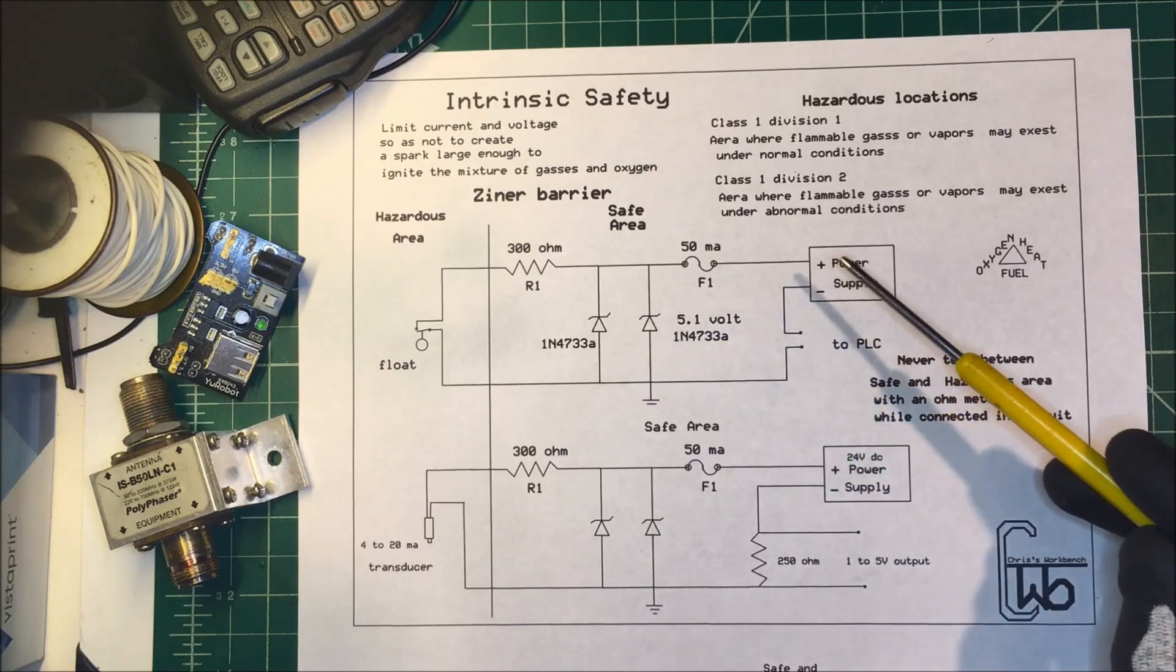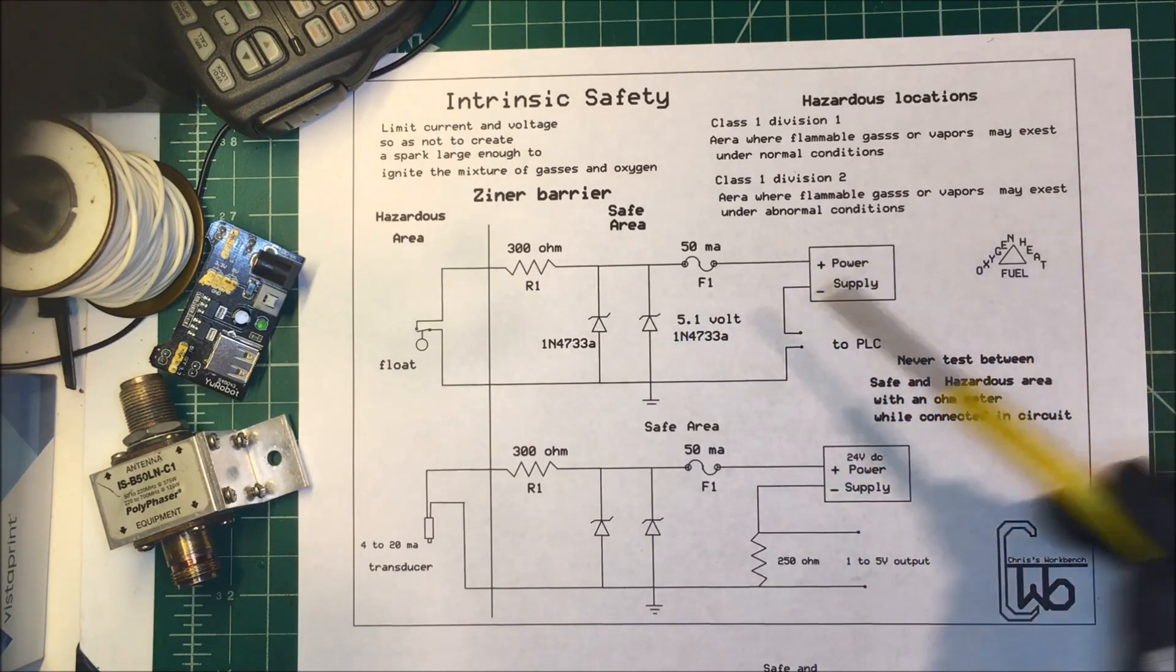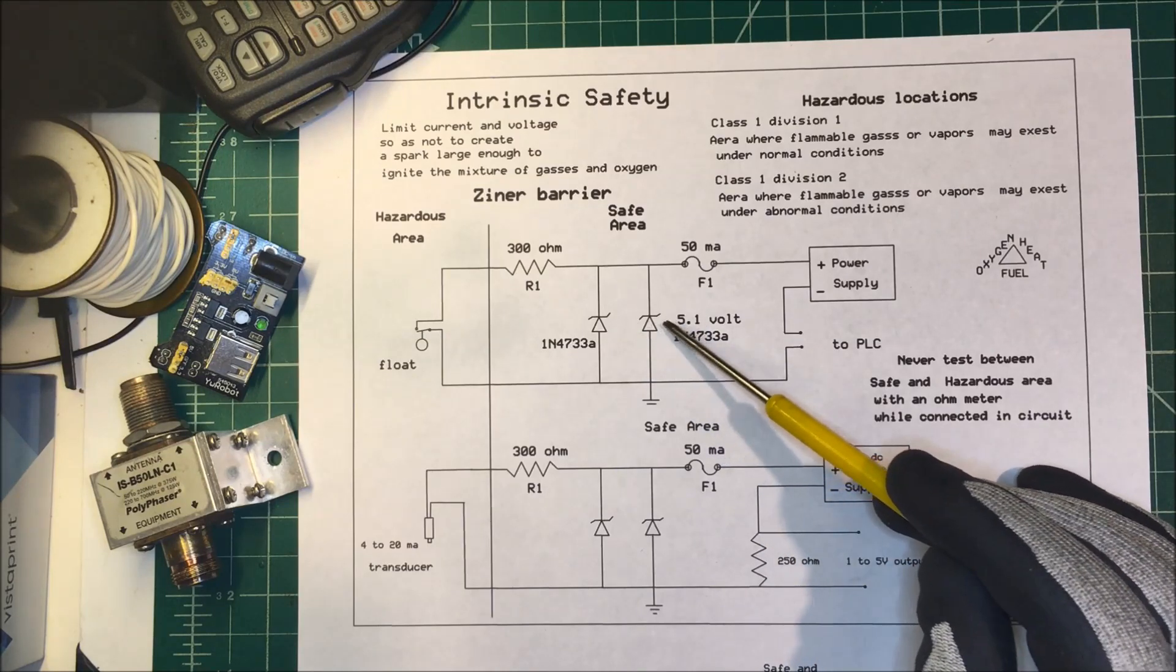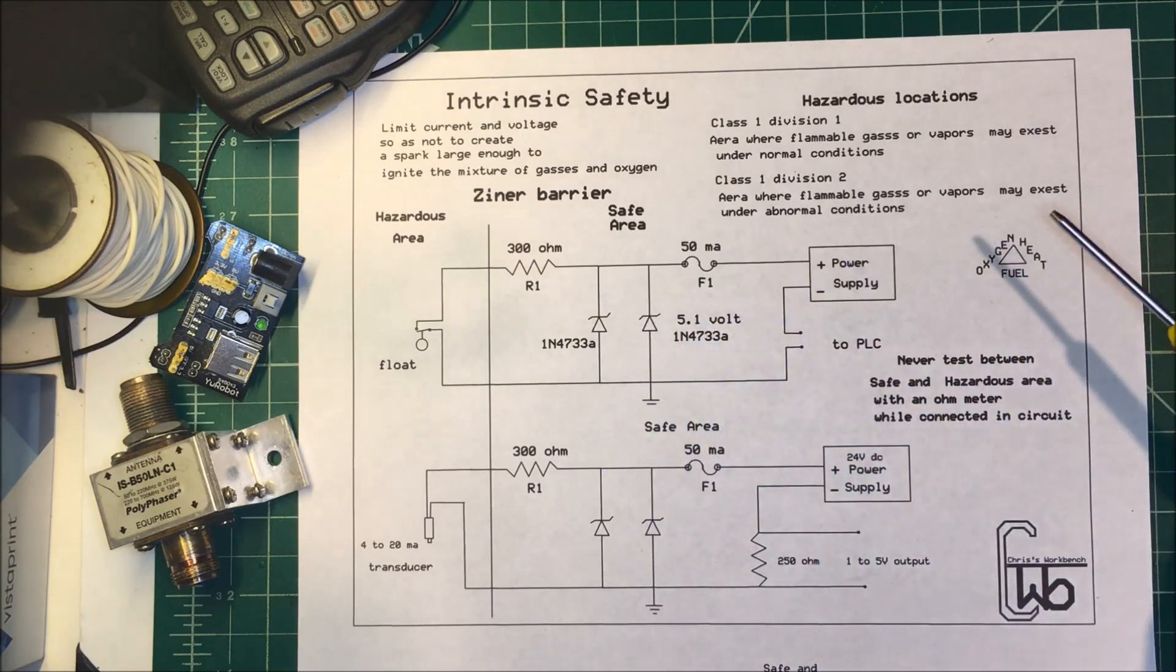These units usually start at about $100 to $150 per unit. You're not paying for the components, but you're paying for the engineering and the liability insurance.